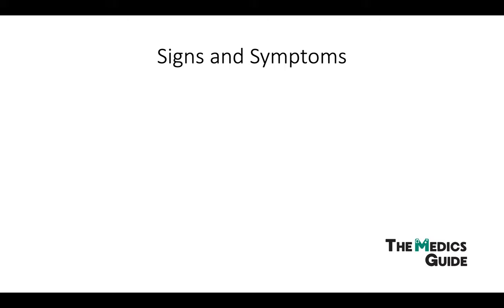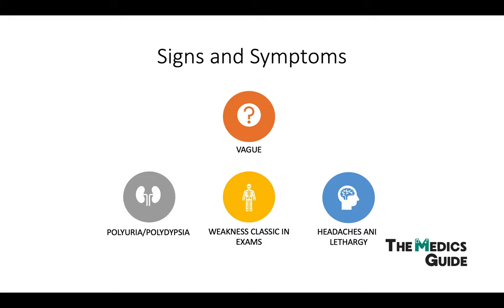In terms of symptoms, they're generally quite vague and at times may be asymptomatic. If symptoms are present, they tend to be things like polyuria and polydipsia due to reduced ability of the kidney to concentrate urine, muscle weakness as a result of hypokalemia — which comes up in exams time and time again — and headaches and tiredness.